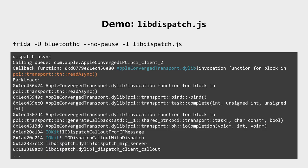Here you can see another example for the Bluetooth daemon. This is executed on an iPhone 11, which has a PCI Express-based chip. The backtrace also shows that this came via IOKit.